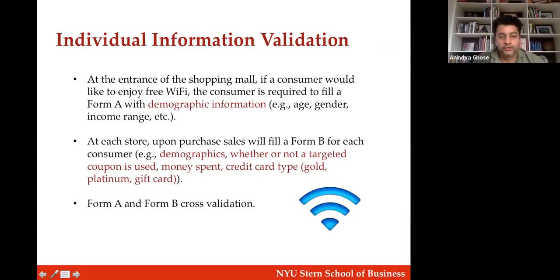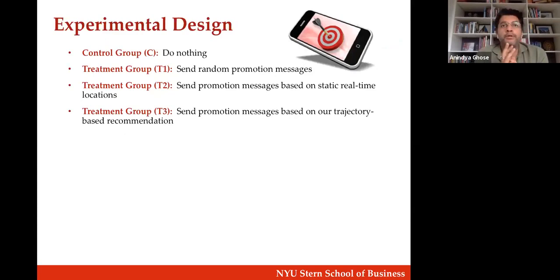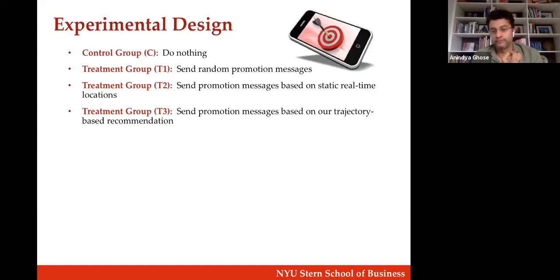Let's talk about the experimental design. People sign into the Wi-Fi, we get the trajectory data, and we use four different groups. The first is the control group — no offers. The second is random targeting: you might be standing in front of Starbucks but get an offer from an unrelated apparel brand. The third is pure location-based targeting. The fourth is trajectory-based targeting — the one we're most interested in.